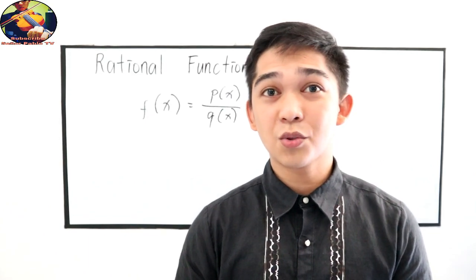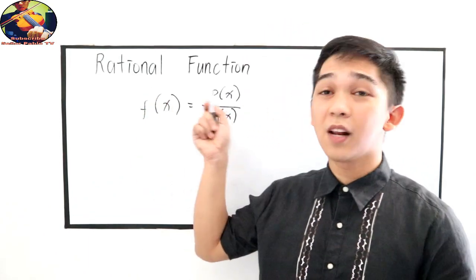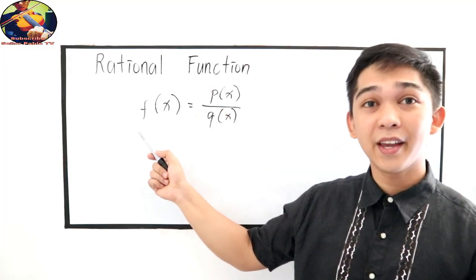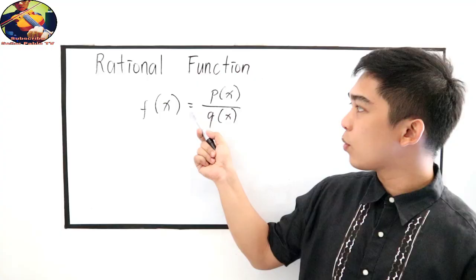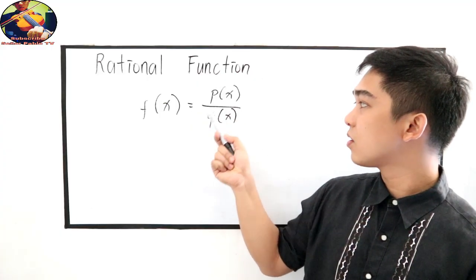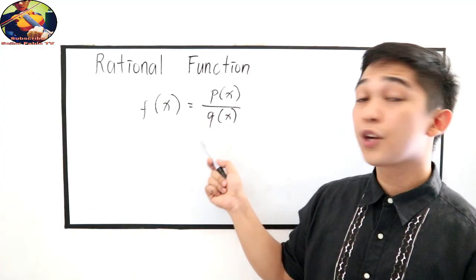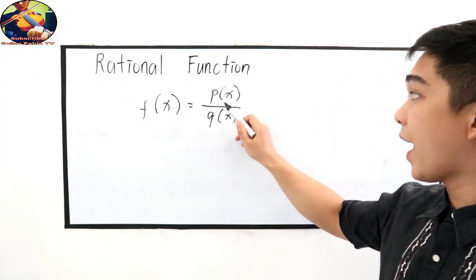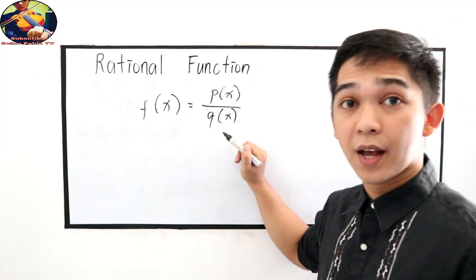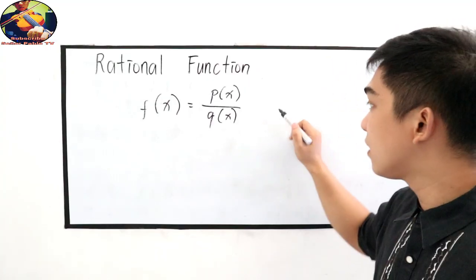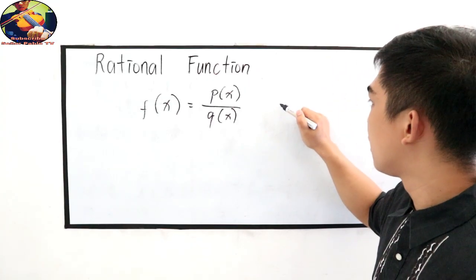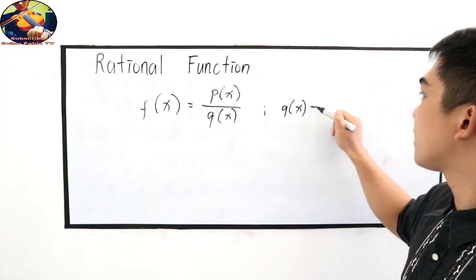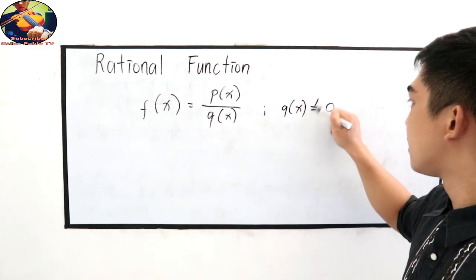In this lesson, you're going to learn what is rational function. A rational function is denoted by f(x) = p(x)/q(x), wherein p(x) and q(x) are polynomials and q(x) must not be equal to 0.